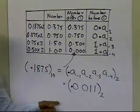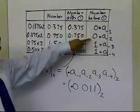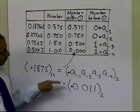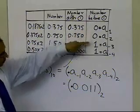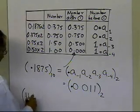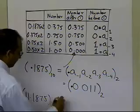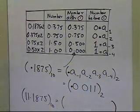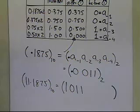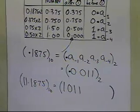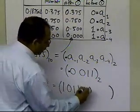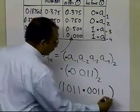When writing the equivalent of the fractional part, you start from the top: 0, 0, 1, 1 — as opposed to the integer part, where you started from the bottom. So for the overall number 11.1875 in base 10, the binary equivalent combines the integer part 1011 and the fractional part: radix point, then 0, 0, 1, 1. So 11.1875 base 10 equals 1011.0011 in base 2.